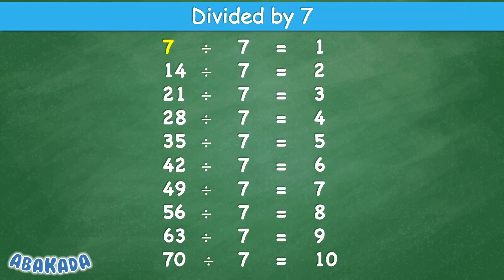Divided by 7: 7 divided by 7 equal 1, 14 divided by 7 equal 2, 21 divided by 7 equal 3, 28 divided by 7 equal 4, 35 divided by 7 equal 5, 42 divided by 7 equal 6.